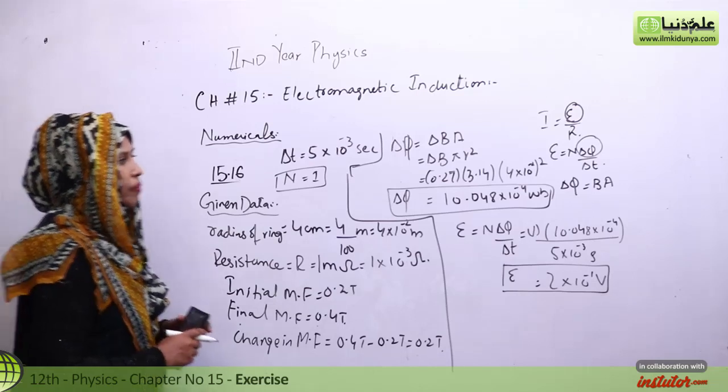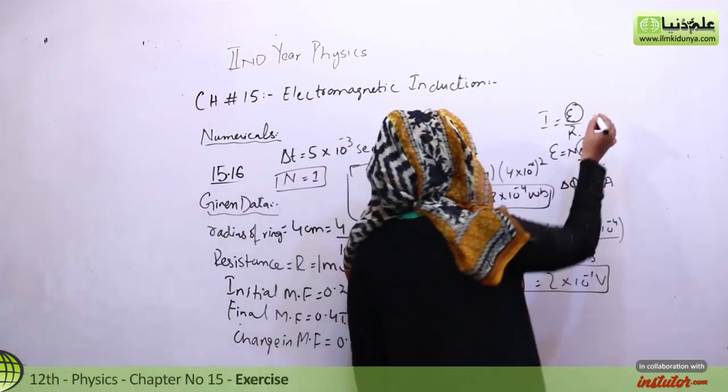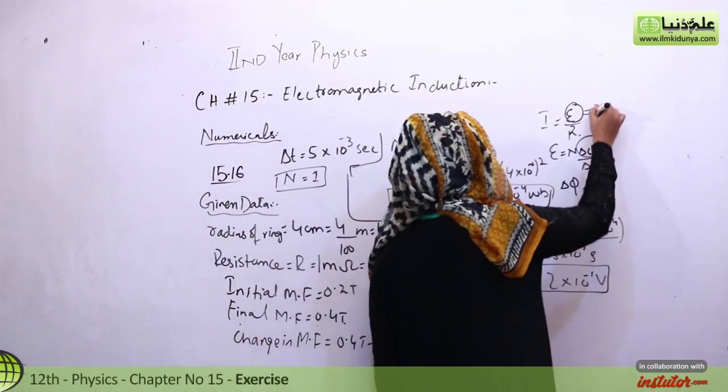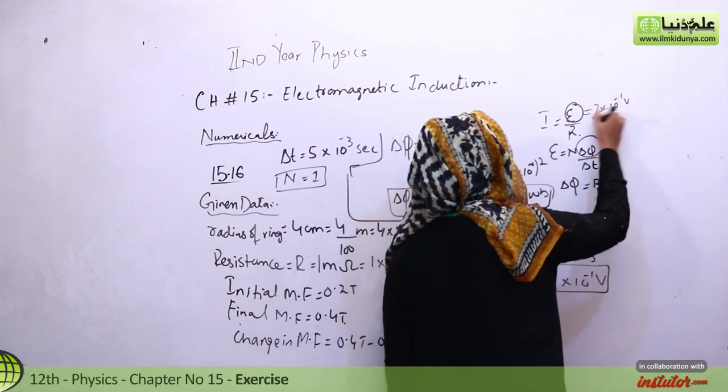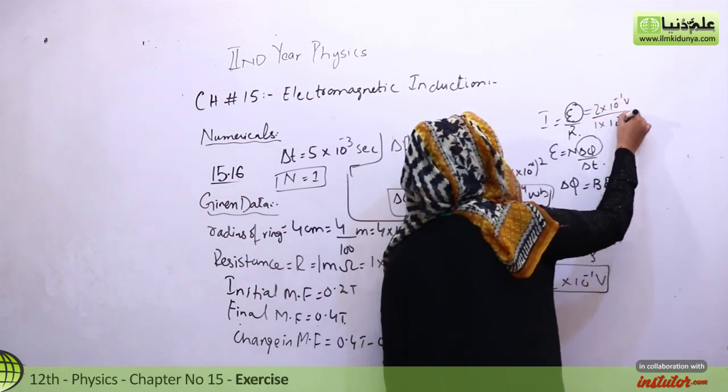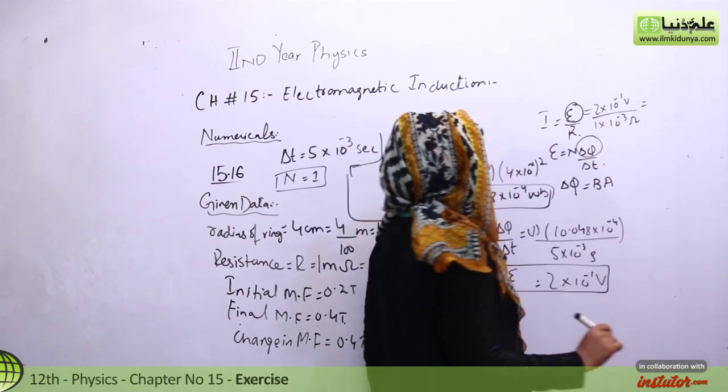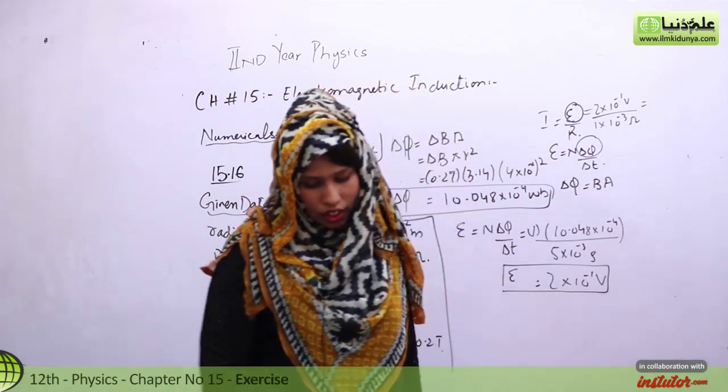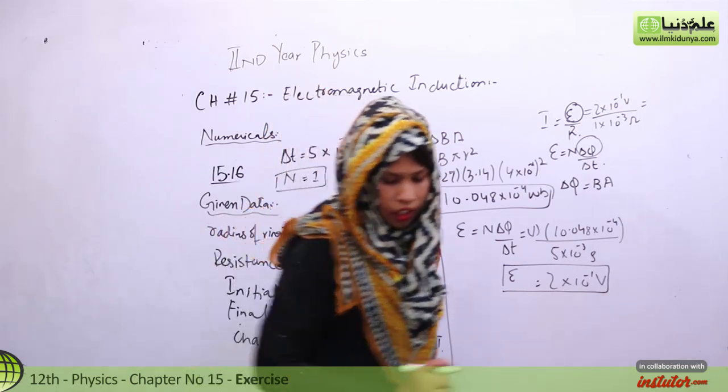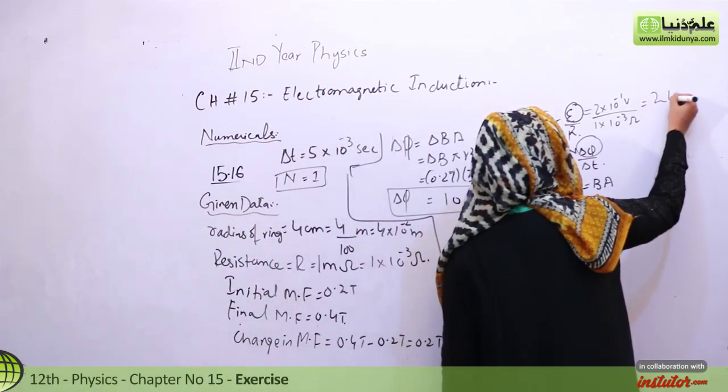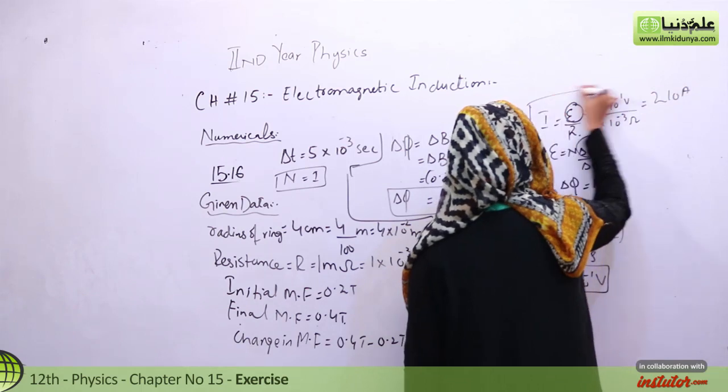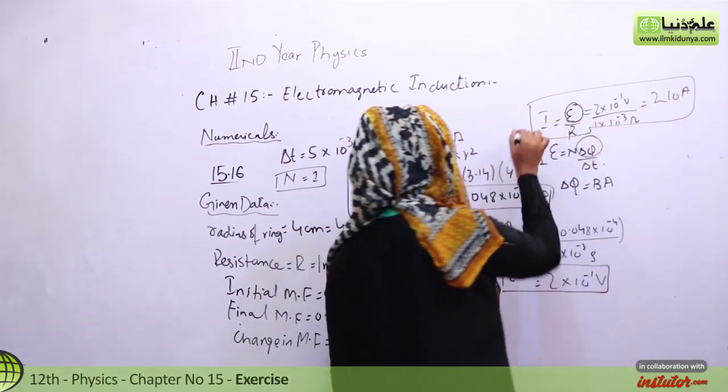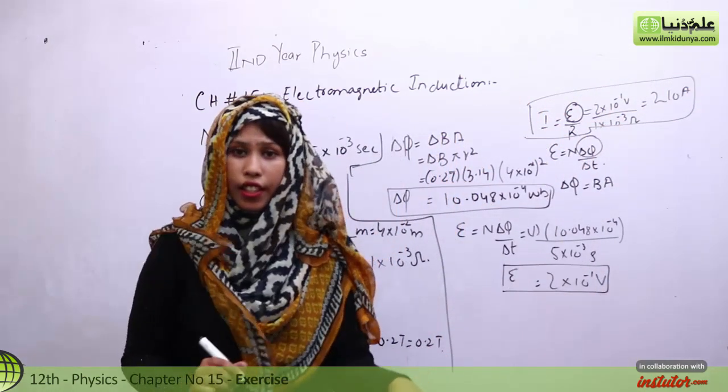The last step is to find the current. For current, we will put the value here. Induced EMF is 2 times 10 to the power minus 1 volts, and the resistance is 1 milli-ohm. When we solve it, the final result is approximately 2 times 10 amperes. So this was our current value.